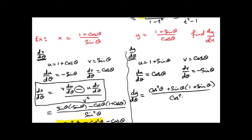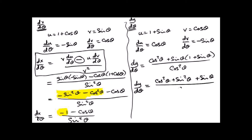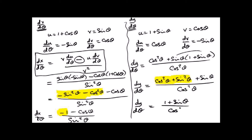Something very similar happens with the cos squared plus sin squared bit. Expanding: cos squared theta plus sin squared theta plus sin theta, divided by cos squared theta. I changed the order so you can see that cos squared plus sin squared equals 1. So dy d-theta equals 1 plus sin theta divided by cos squared theta. Now at this stage we have dx d-theta and dy d-theta all sorted out.